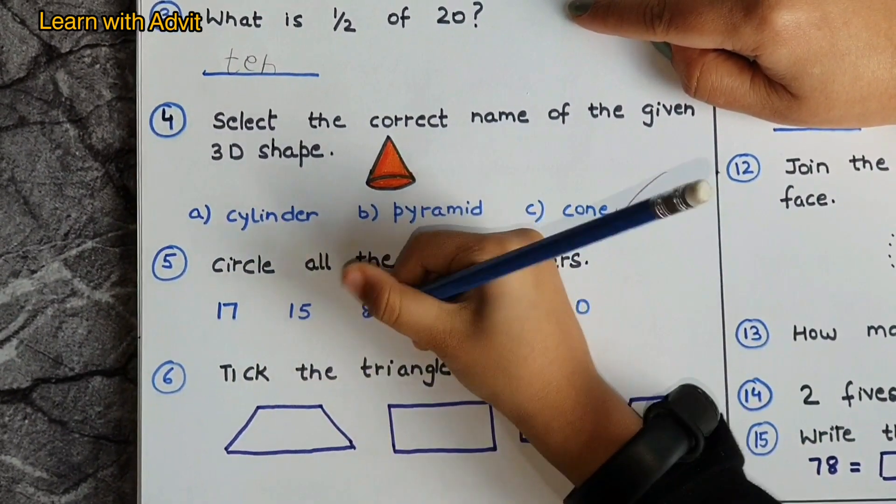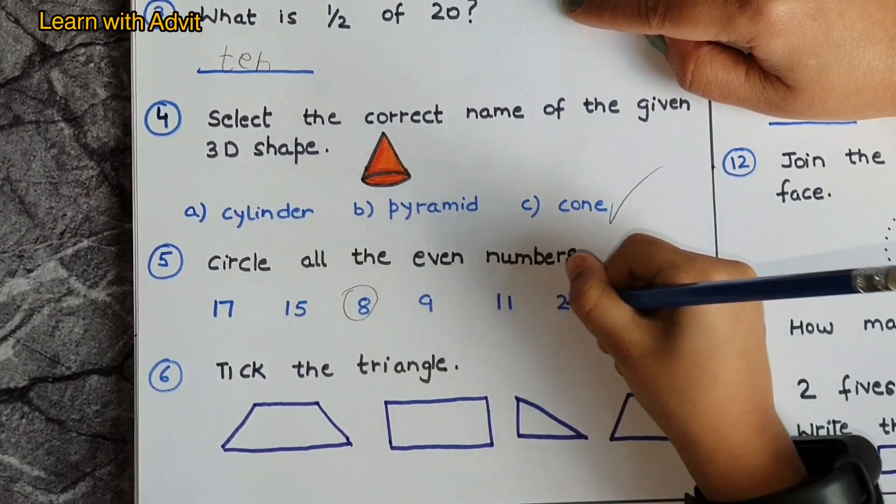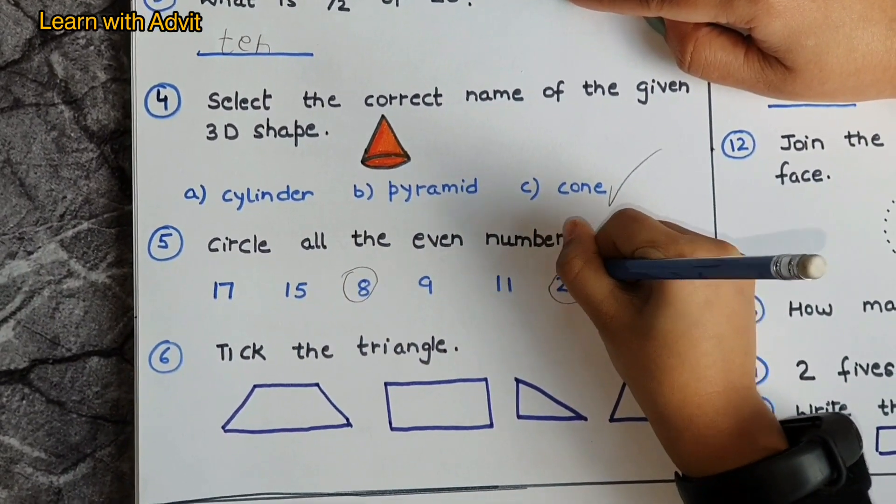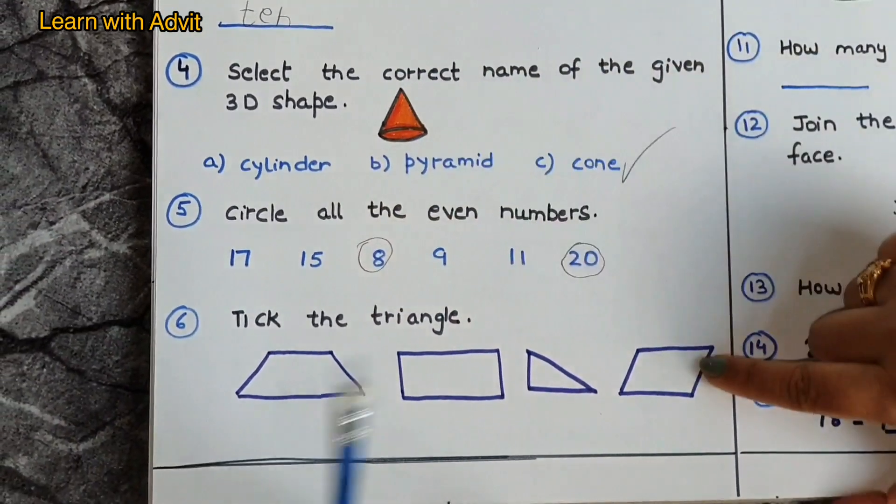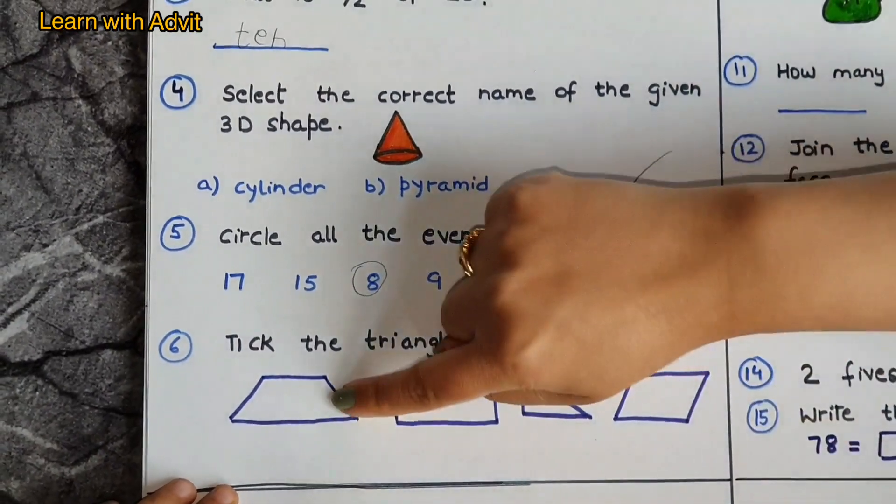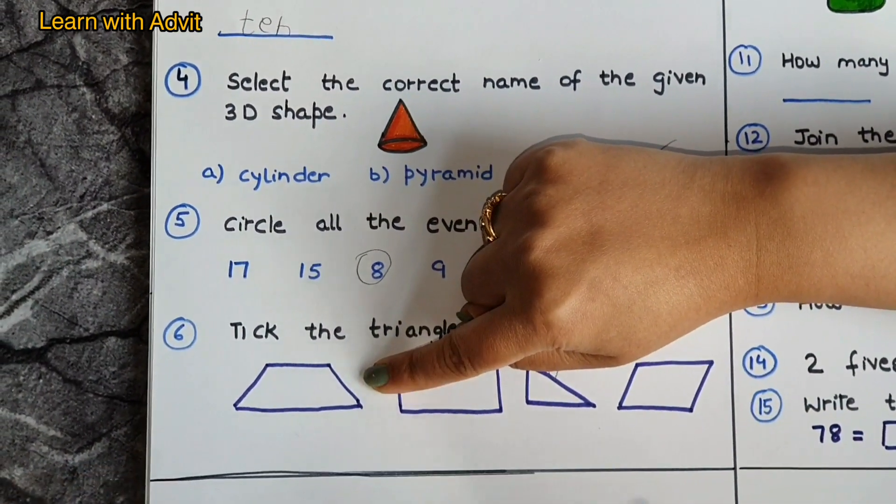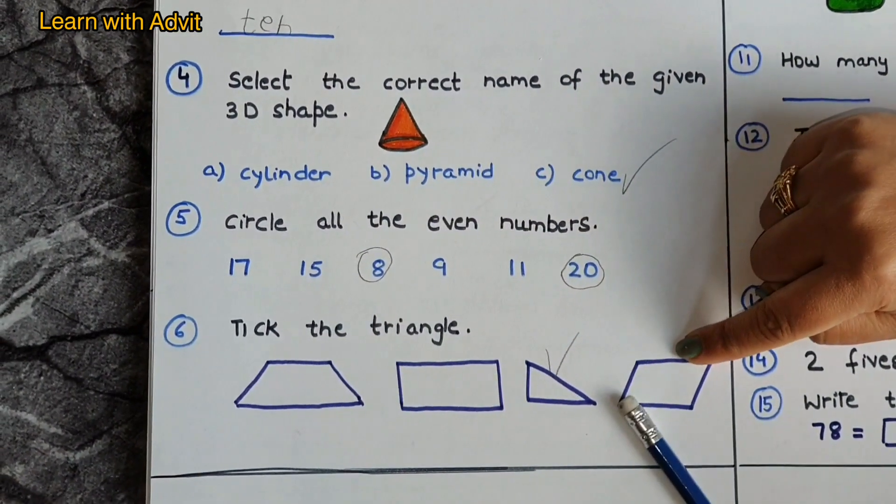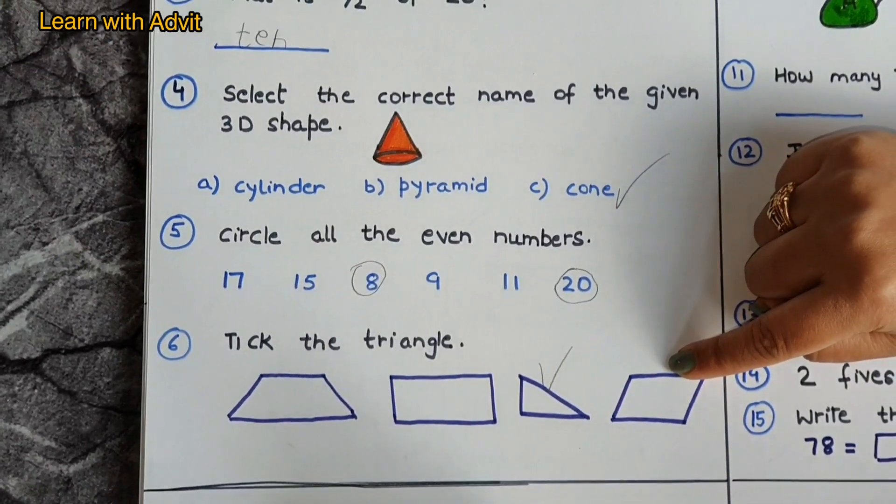Take the triangle. Which shape is this: trapezoid, rectangle, or parallelogram? Very good.